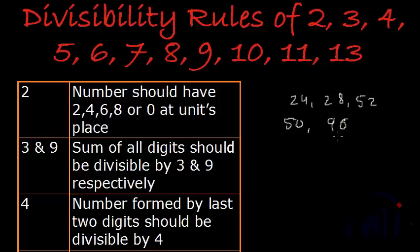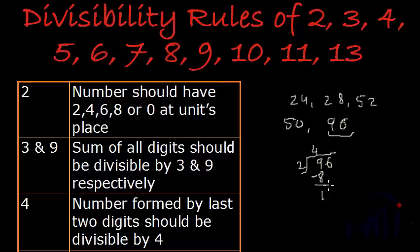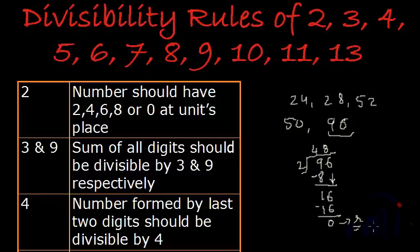Let's check divisibility of one number. I'll take 96. When 96 gets divided by 2, we should get remainder as 0. Here we are getting remainder as 0 and the quotient is 48. So this proves that 96 is completely divisible by 2.